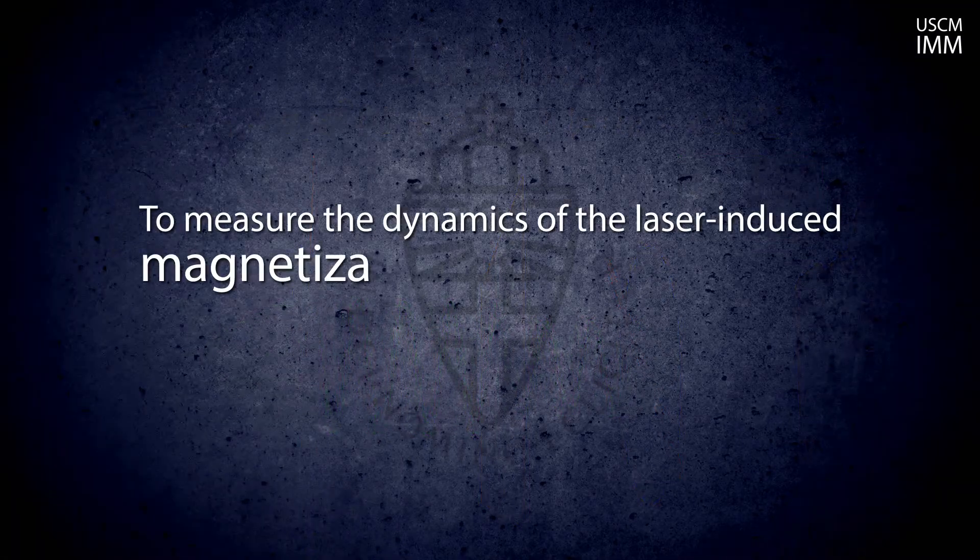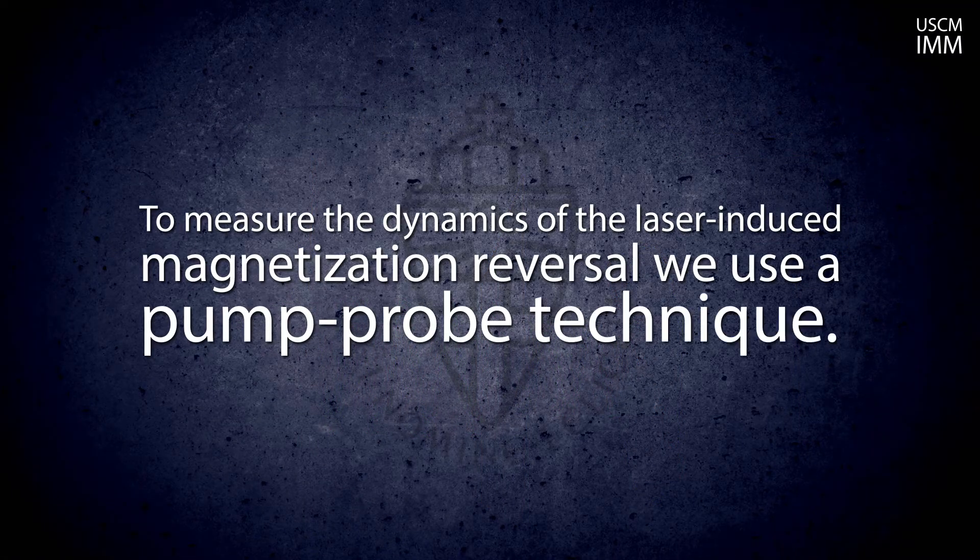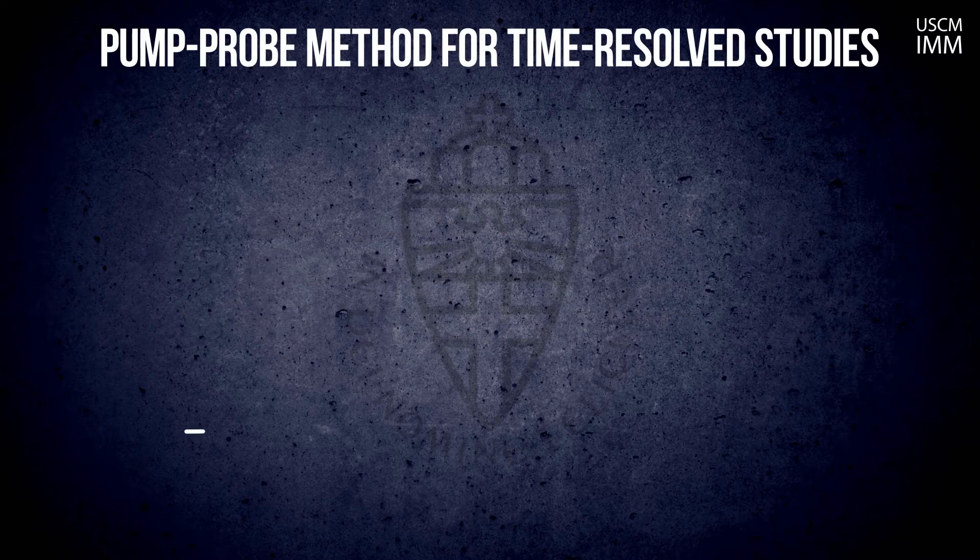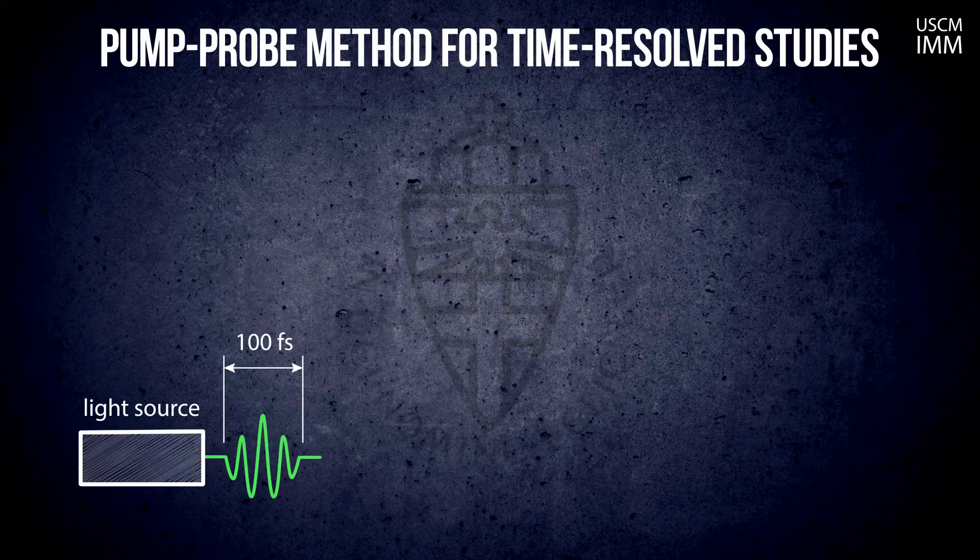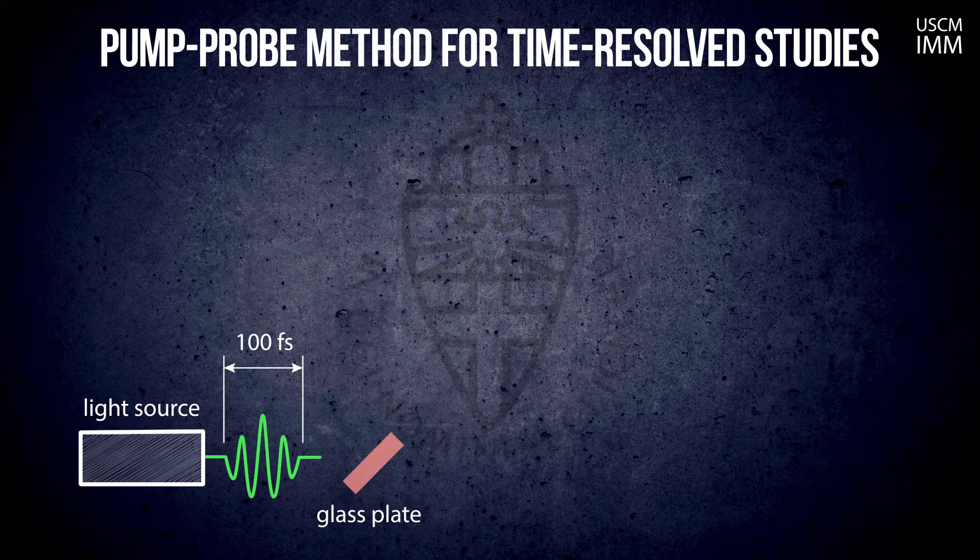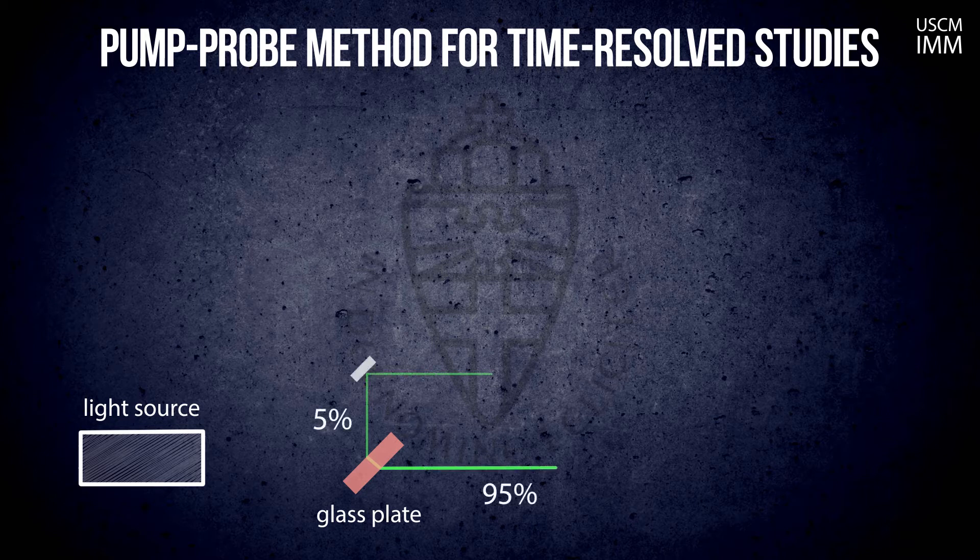To measure the dynamics of the laser-induced magnetization reversal, we use a pump and probe technique. Imagine that the light source produces a flash which is as short as 150 femtoseconds. With the help of a glass plate, we split the flash into two parts with a ratio approximately 95 to 5%.